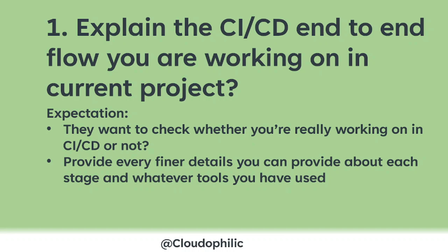You can answer like: in my current project, we have version control in GitHub, and for CI we have Jenkins. Jenkins is connected and integrated with the version control tool, so whenever any commit or event happens on version control, our pipeline triggers. That builds our pipeline in Jenkins, and then code analysis happens from SonarQube.